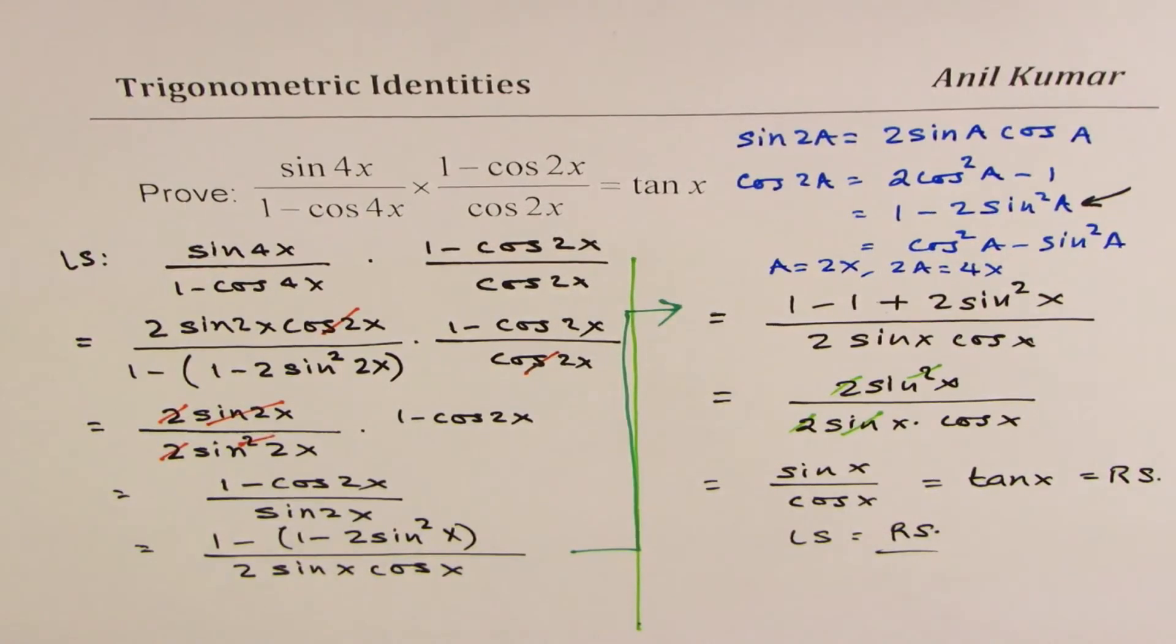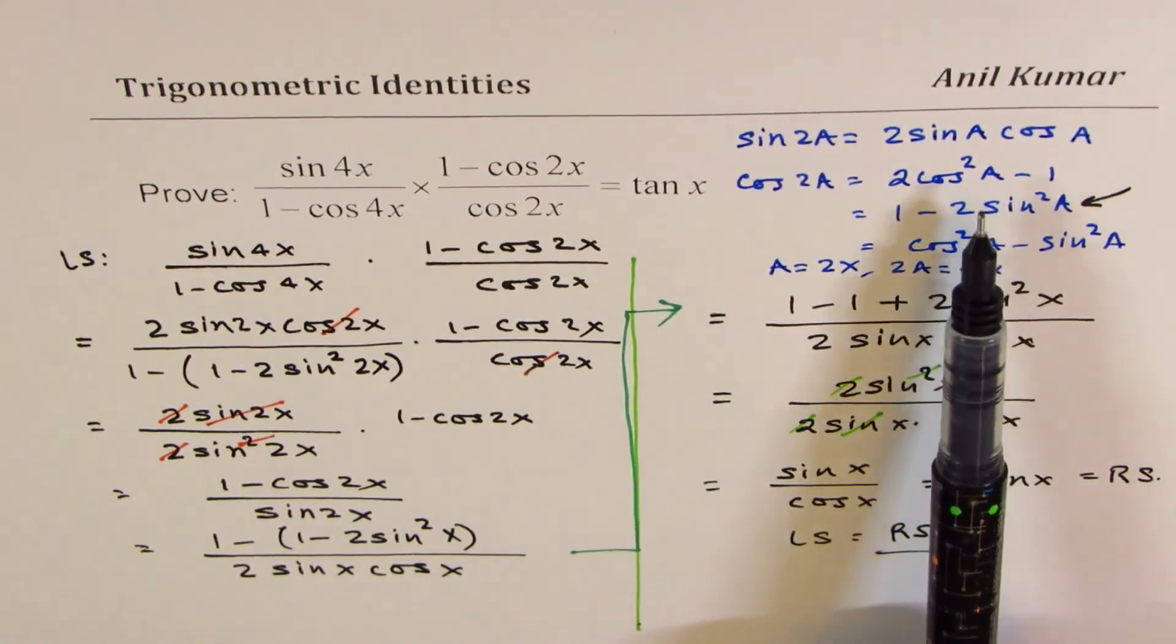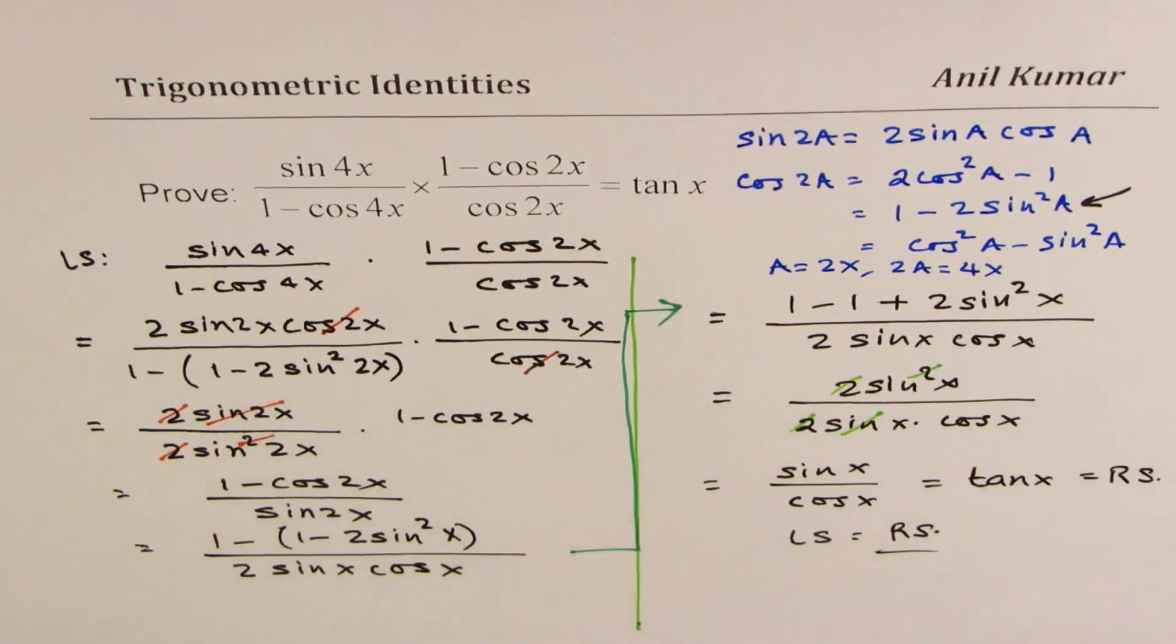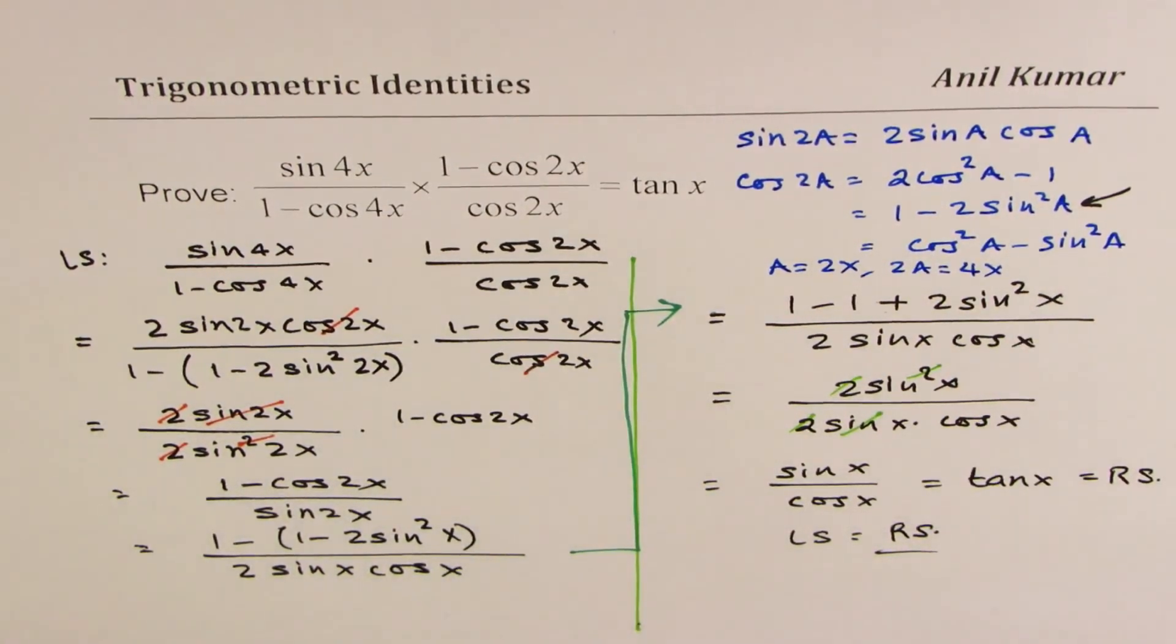So we just got our result. You could have also replaced this by 2 cos square x minus 1, cancel out these terms and got the result. That was also a very effective solution. So either way, you could solve this particular identity. I hope it helps you to recall your double angle formulas and use them in proving identity.